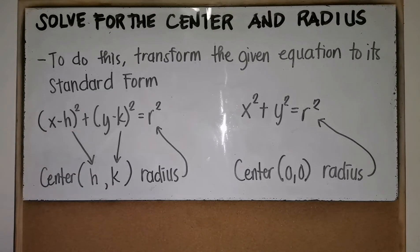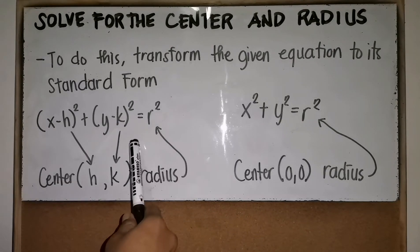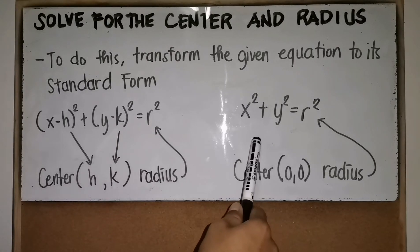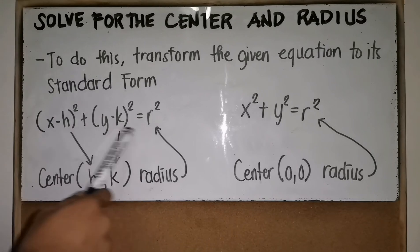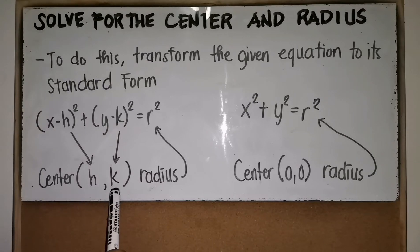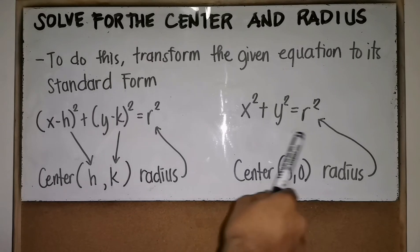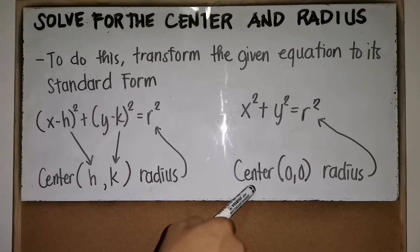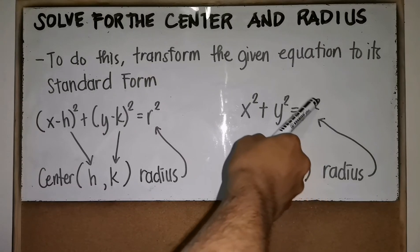Lastly, let's solve for the center and radius of the given equation of a circle. To do this, let's transform the given equation to its standard form. The standard form has two types: one where the center is not at the origin, with center at (h, k) and radius r; and one where the center is at the origin (0, 0), with radius r found directly on the right side.